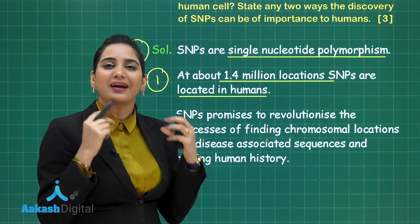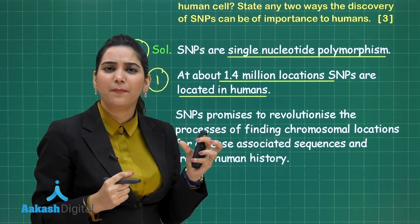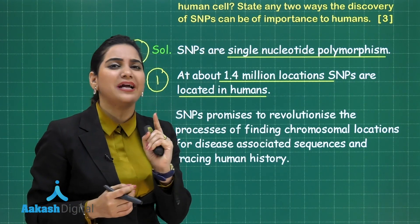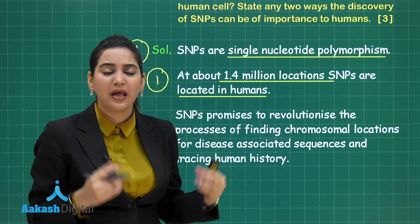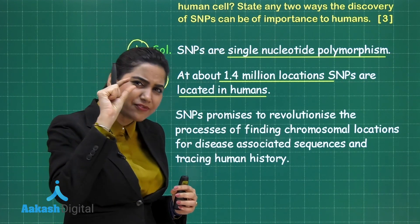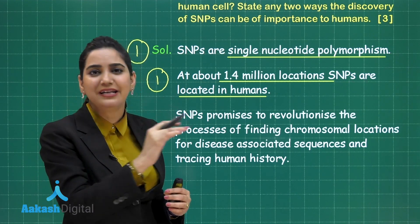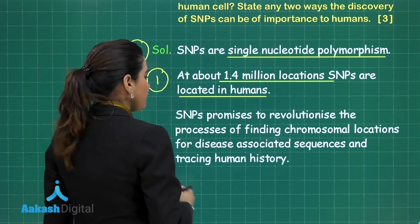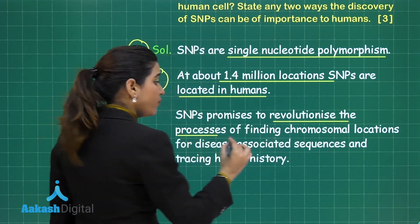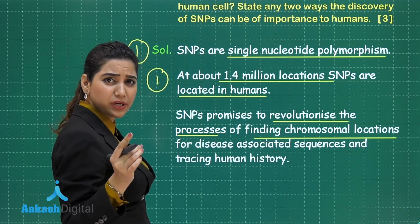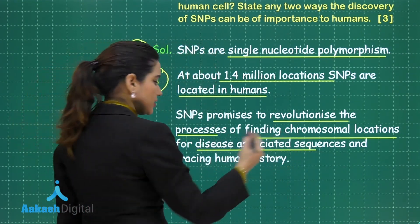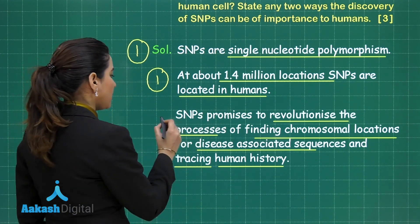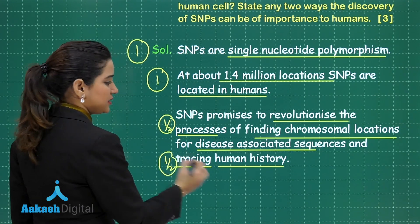SNP means that at such locations, the DNA sequence is similar to other regions, but there is a change of just one nucleotide. Because of that one nucleotide change, the whole DNA segment can change. If we can trace those SNPs, we can use it for two good things: number one, SNPs promise to revolutionize the process of finding chromosomal locations, especially those which are disease-associated. And it will also help in tracing human history. That gives 0.5 marks for each point, totalling one mark.